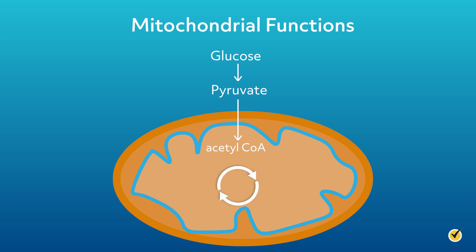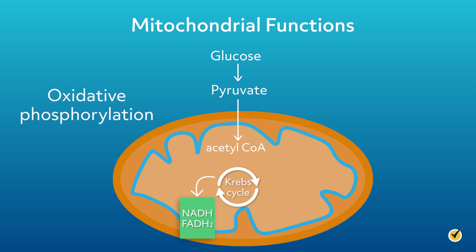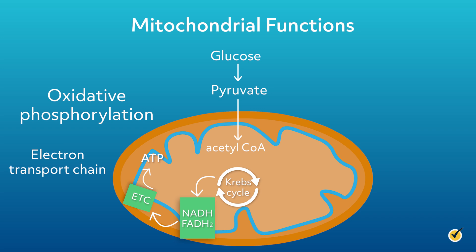Those two pyruvate molecules enter the mitochondrial matrix and bind to coenzyme A to form acetyl coenzyme A (acetyl-CoA). The acetyl-CoA is now ready to enter the citric acid cycle, or the Krebs cycle. This cycle occurs in the inner membrane space. Acetyl-CoA undergoes a series of oxidation-reduction reactions with NAD+ and FAD to form NADH and FADH2 respectively. We then enter the last two stages of the metabolic process, known collectively as oxidative phosphorylation, because the molecules involved are oxidized and phosphorylated. The first stage is the electron transport chain — a series of transmembrane proteins in the inner membrane that transfer the electrons stored in NADH and FADH2 to the inner membrane space, generating a proton motive force needed by ATP synthase.